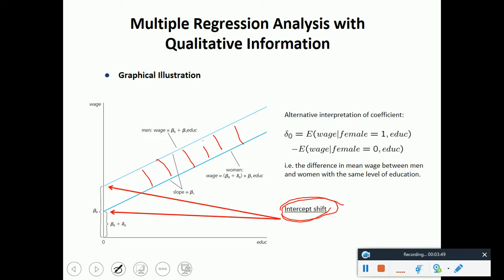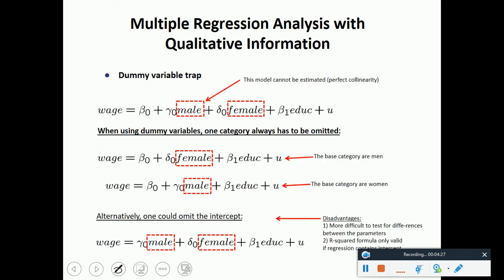Men usually earn a higher wage than women. Similarly, if we are estimating wage amongst different ethnic groups like whites, blacks, or Hispanics, it may appear that some groups might have a higher wage than other groups. The qualitative information is actually captured by this intercept shift.